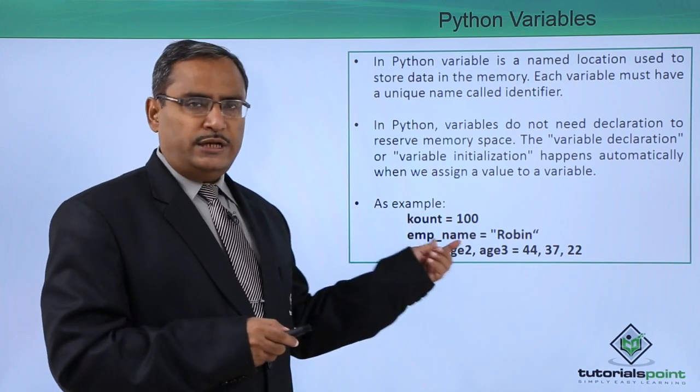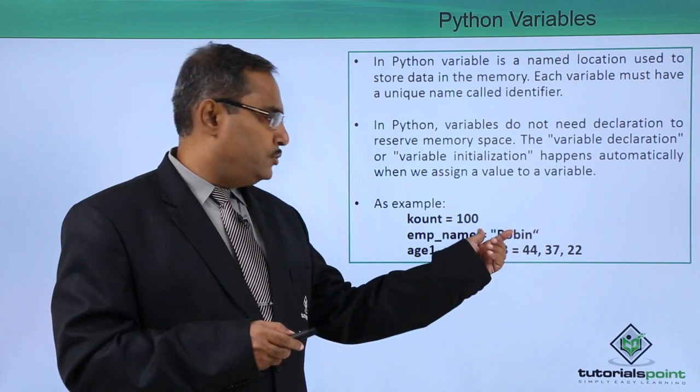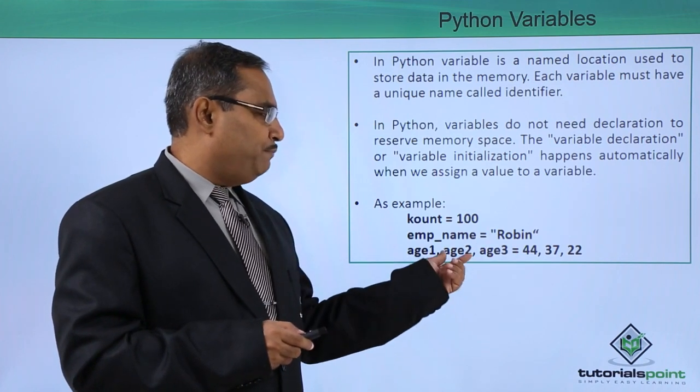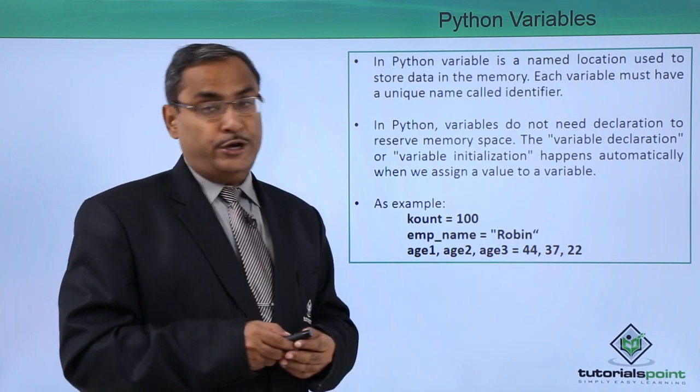Here you see there is count = 100, emp_name = 'Robin', and h1, h2, h3 = 44, 37, 22.